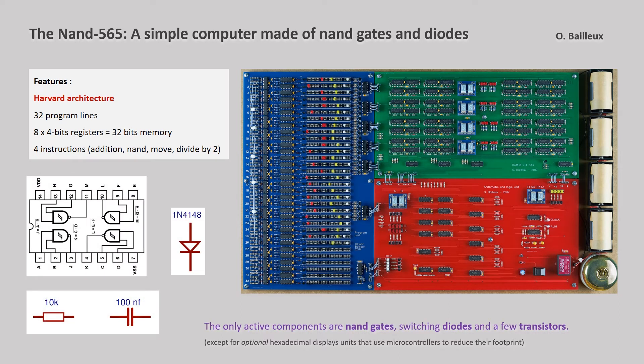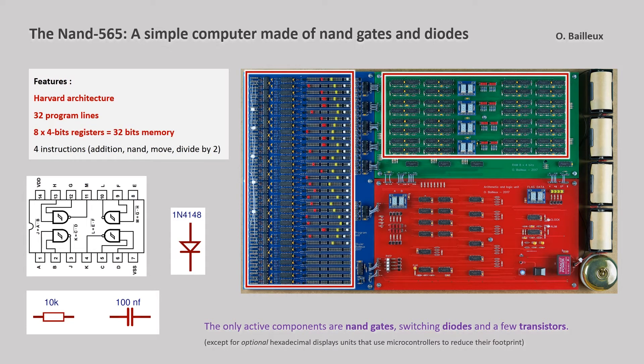resistors, and capacitors, as well as a few dozen transistors. It has 32 program lines, 8 4-bit registers, and a set of 4 instructions.